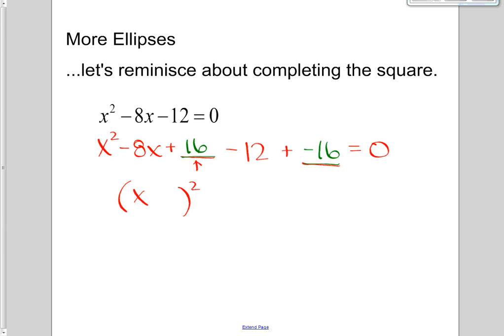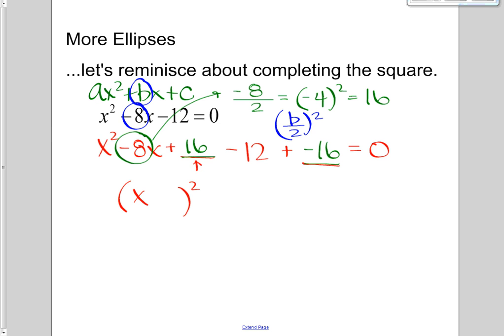Now the reason that 16 was chosen is because I take this value right here, so this negative 8, and I want to divide it by 2, which gives me negative 4, and then I take that value and square it to get 16. So if this is in the form ax squared plus bx plus c, then this is the b value. So what's happening right here is I'm taking b, dividing it by 2, and squaring it. And that's where this number is coming from.